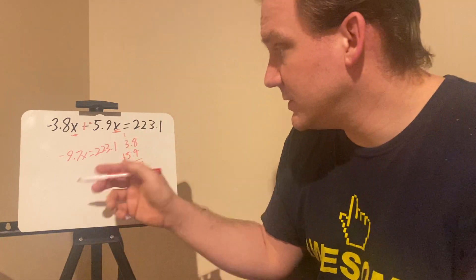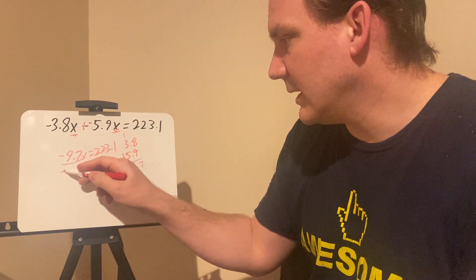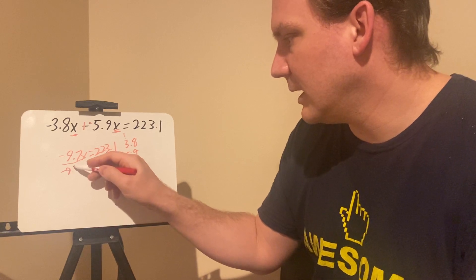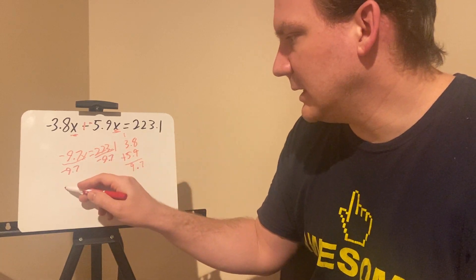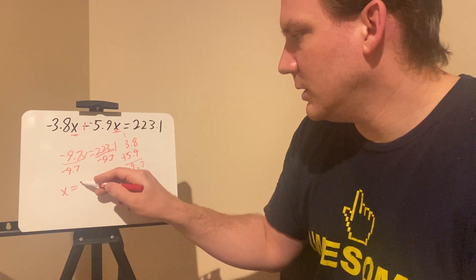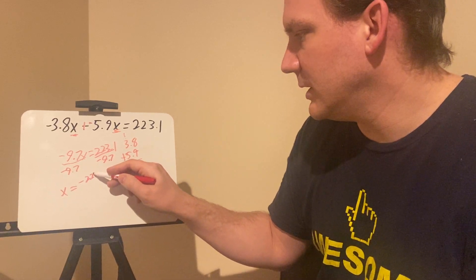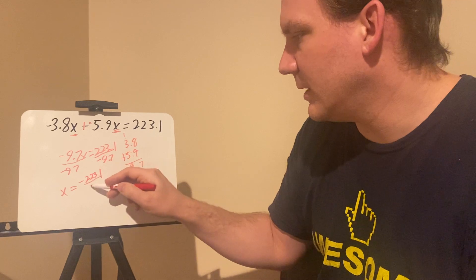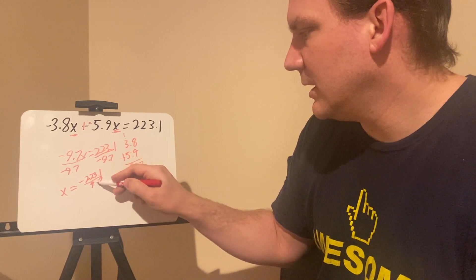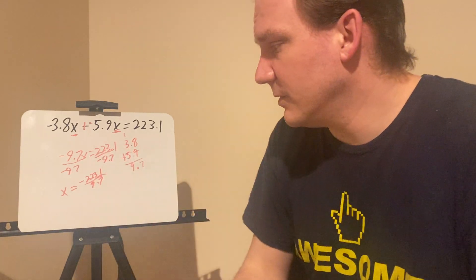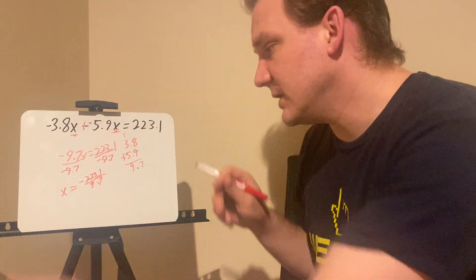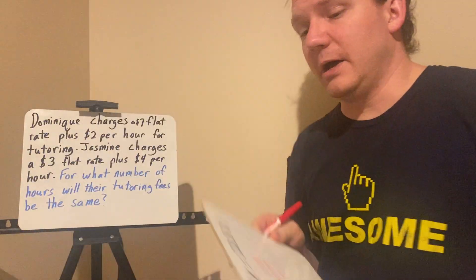I can use inverse operations to solve for x by dividing both sides by negative 9.7. That's going to mean that x is going to equal negative 223.1 divided by 9.7. You could use a calculator to actually figure out the value of this simplified.